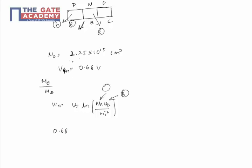0.68 equals 0.026 ln(N_A × 2.25×10^15 / (2.25×10^20)). N_A is unknown, N_D is 2.25×10^15, and n_i^2 is 2.25×10^20. If the following calculation is performed,